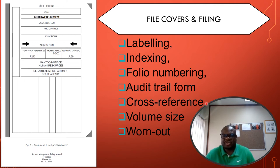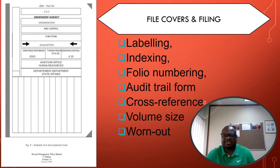The cross reference is very important and is usually placed on top of all the records when a file is full and closed, so that you can refer the user to the next volume — for example, 'Volume closed, please see Volume 2.' This also helps auditors who may not be familiar with the filing system; when they see the cross reference, they'll know that if what they need is not in the file, it may be in the next volume, rather than concluding that the record is missing.